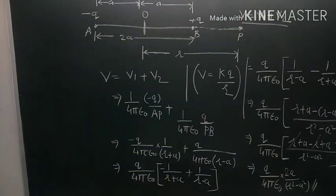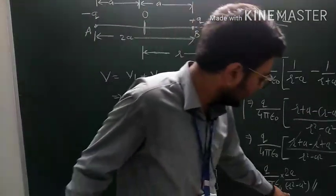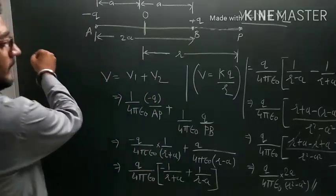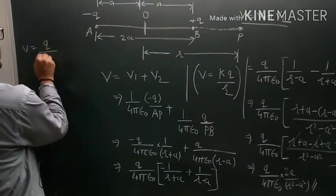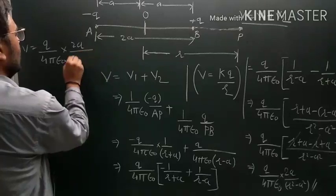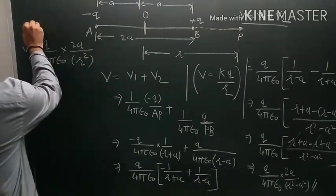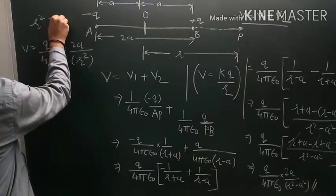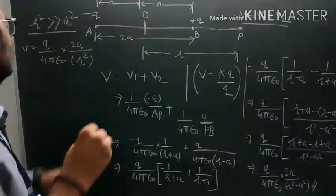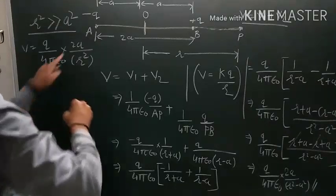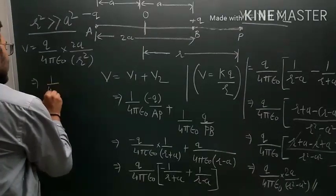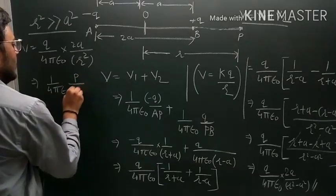For a short dipole we can neglect a² compared to R², since R² is much greater than a². So we write: V equals Q upon 4πε₀ times 2a upon R². Now 2a times Q is nothing but the dipole moment P. So we can write: V equals (1/4πε₀) times P upon R². That is the magnitude of the electric potential for a short dipole.